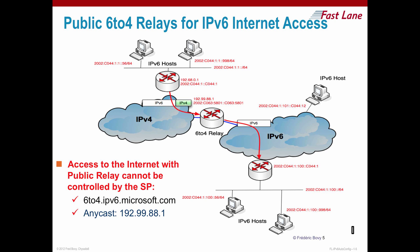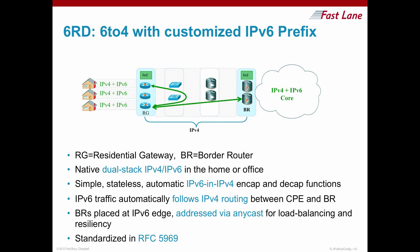For a service provider, 6to4 was not ideal because you could not customize the 2002 prefix. Without prefix customization, you had to rely on a public 6to4 relay for internet access. You could install a 6to4 relay to exit your domain, but you could not control the return path from the IPv6 internet back to your network. So for a service provider or large enterprise it was not a good solution, though it was very attractive for home users.